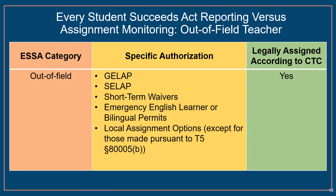There is a discrepancy between California's ESSA definition for out-of-field and the CTC's view. The CTC views all of the following permits as legal assignments: General Education Limited Assignment Permits (GLAPs), Special Education Limited Assignment Permits (CLAPs), Short-Term Waivers, Emergency English Learner or Bilingual Permits, and Local Assignment Options except for those made pursuant to T5-80005B, because teachers hold a document or permit that allows them to temporarily teach outside of their credentialed area. The California ESSA definitions and the assignment monitoring reports would place teachers authorized by these limited permits in the out-of-field category.